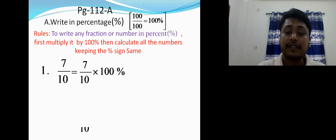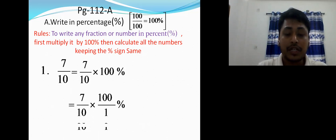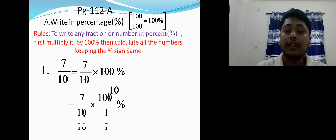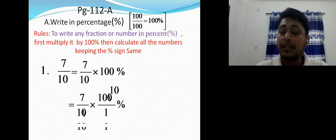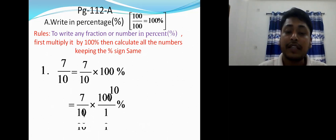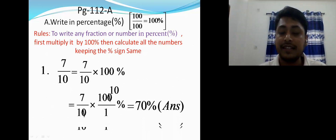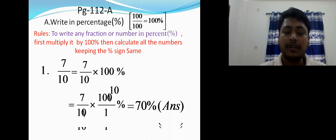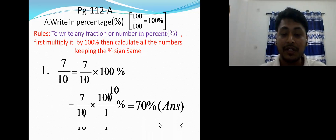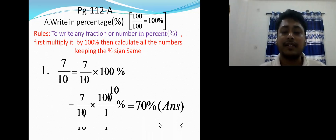Cancel the zero in 10 and one zero in 100, so ten remains. Now multiply 7 and 10 to get 70 percent. That's the answer. So whatever number is given, multiply by 100 percent, keep the percent sign, and calculate all other numbers to get the answer.